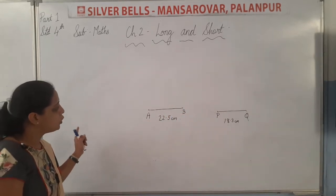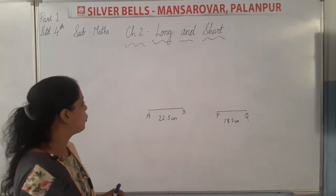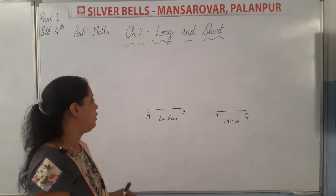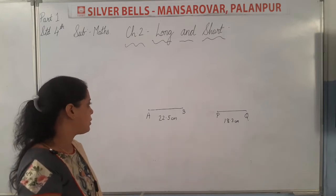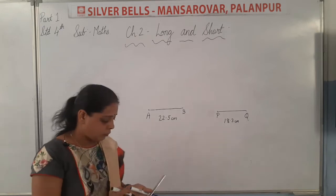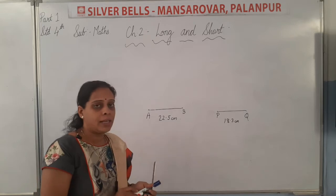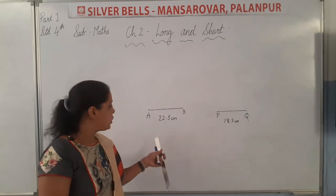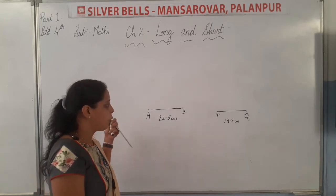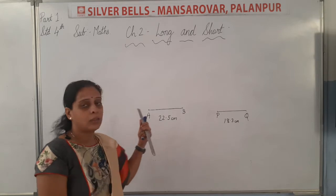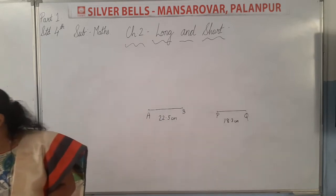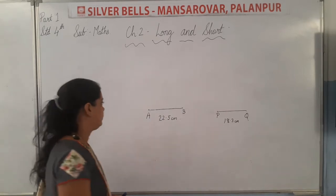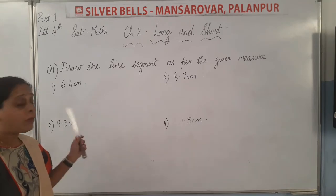So, I hope you must have understood how to draw line segments and measure the distance between the two points. Same exercise will also be given in homework. Draw a line of 22.5 centimetre, 17.6 centimetre — you have to draw according to that. Now, our first question is: